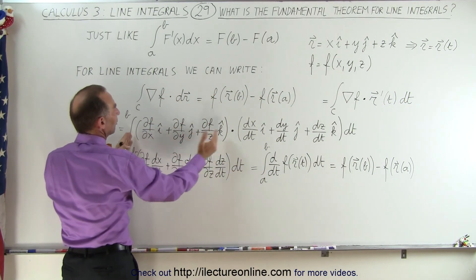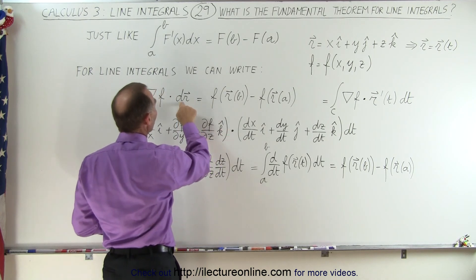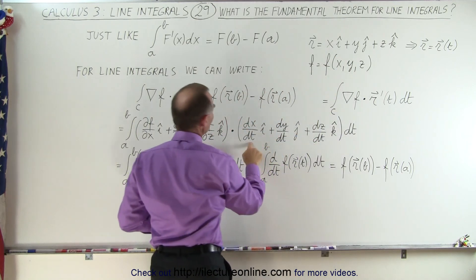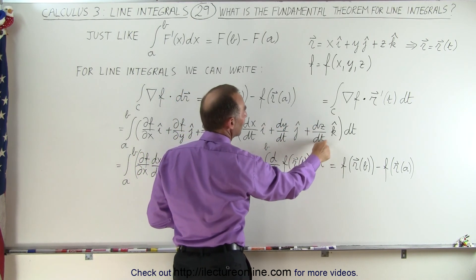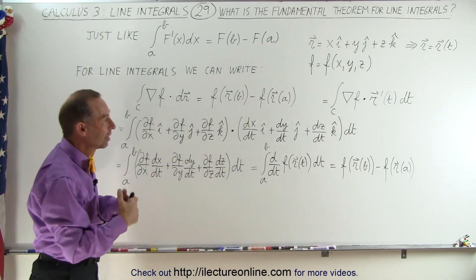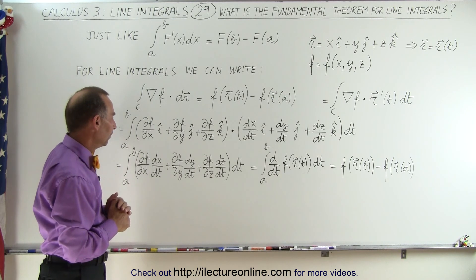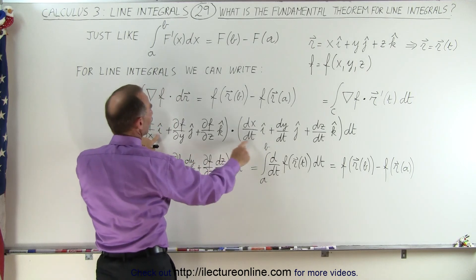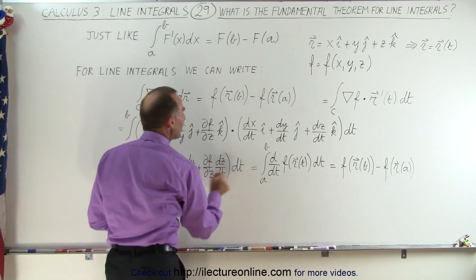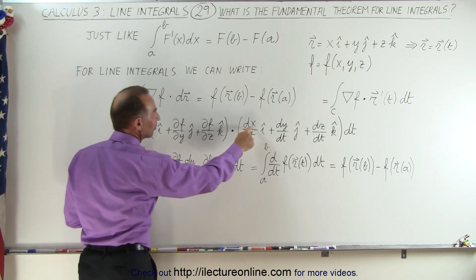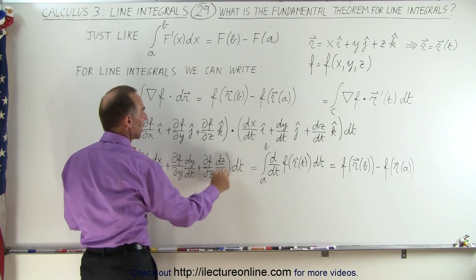The gradient of the scalar function — now a vector — is dotted with the differential of the position vector. If r is defined in terms of t, then dr/dt has the derivative of x with respect to t in the i direction, the derivative of y with respect to t in the j direction, and the derivative of z with respect to t in the k direction, the whole thing times dt. When we multiply these two together, the i's, j's, and k's disappear because a dot product yields a scalar. We end up with: the partial of f with respect to x times dx/dt, plus the partial of f with respect to y times dy/dt, plus the partial of f with respect to z times dz/dt, all times dt.